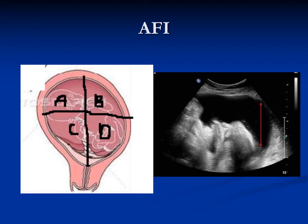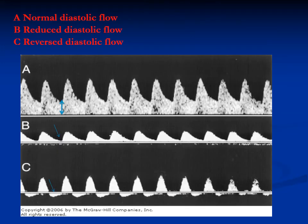Normally the amniotic fluid index is between 8 and 25 cm. Less than 5 cm indicates oligohydramnios; more than 25 cm indicates polyhydramnios.